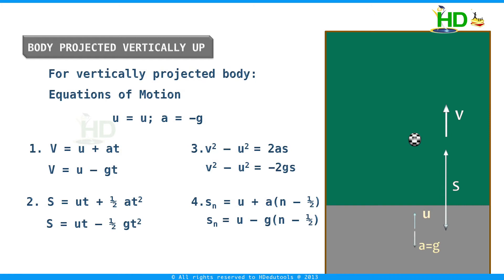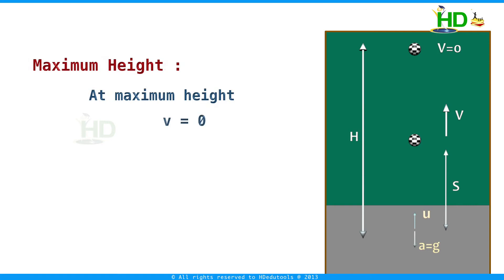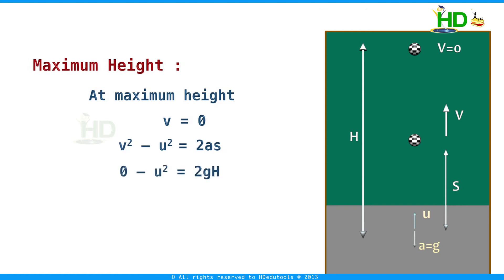What is the maximum height a vertically projected body can reach? At maximum height, the velocity is zero. Taking initial velocity u, final velocity 0, and acceleration a equal to minus g, and using v squared minus u squared equal to 2as: 0 minus u squared equals minus 2gh. Therefore, the maximum height h equals u squared divided by 2g.